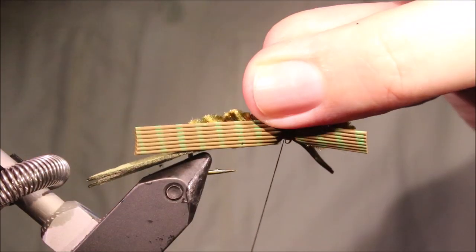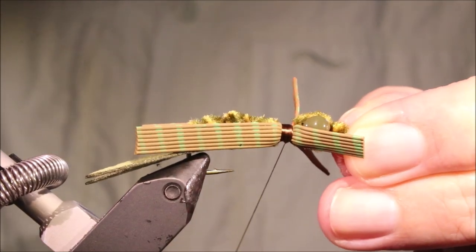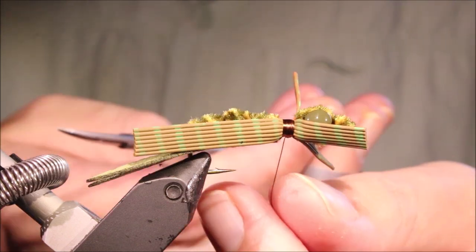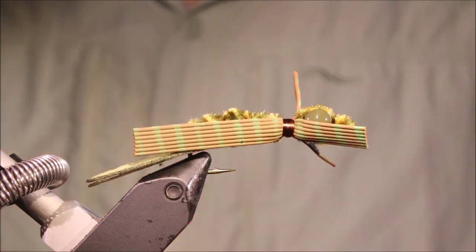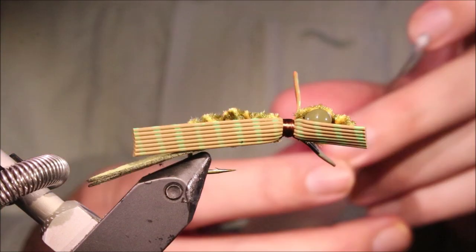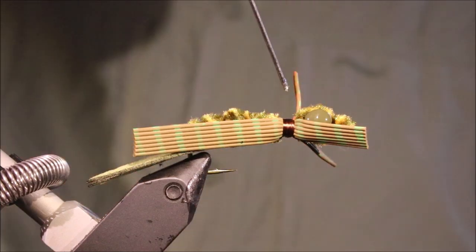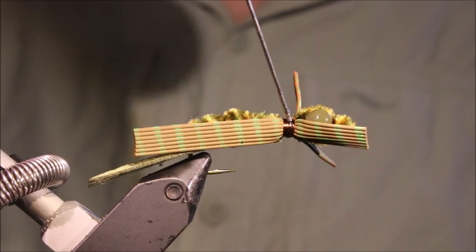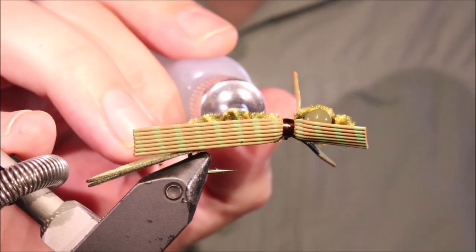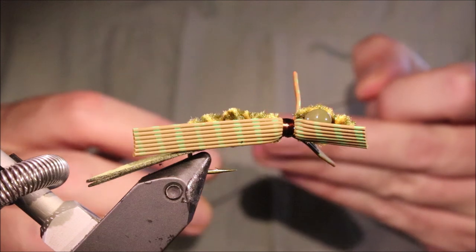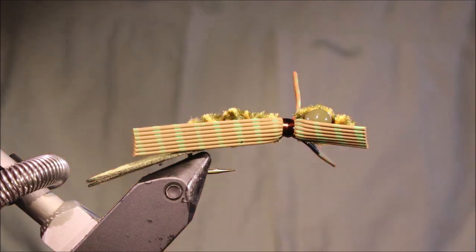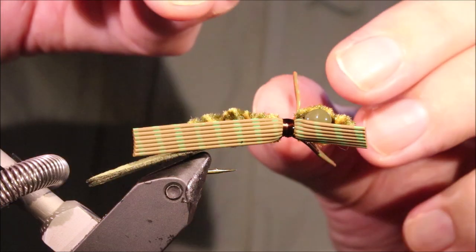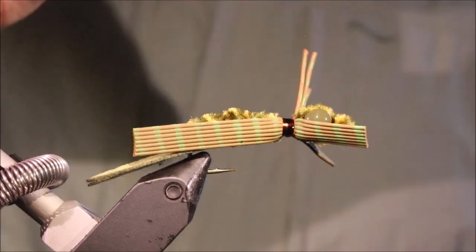I always do two, nice and tight, and then I'll come in with my varnish, don't use super glue, because the super glue will make your legs break, you've got to use Sally Hansen's or something.